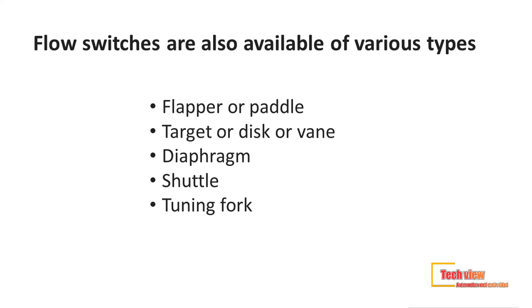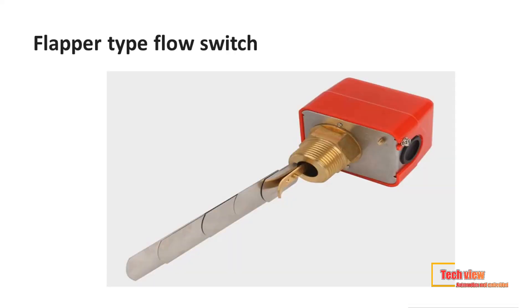Types of flow switches: flow switches are available in various types such as flapper, target or disk, diaphragm, shuttle, piston, tuning fork, etc. The flow switch consists of a flapper device hanging with the flat surface facing the direction of flow through a hinge. A permanent magnet is connected to this end.